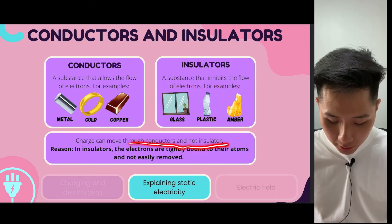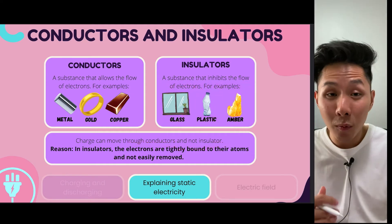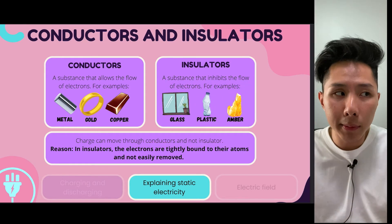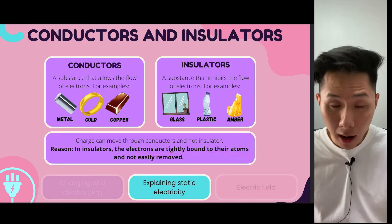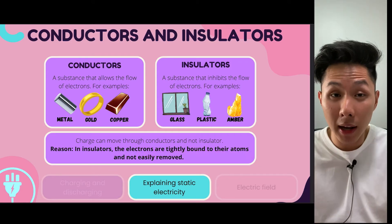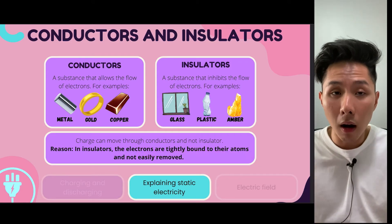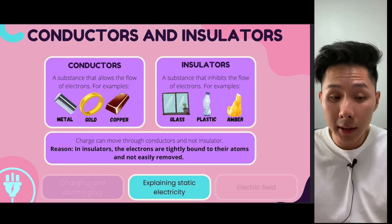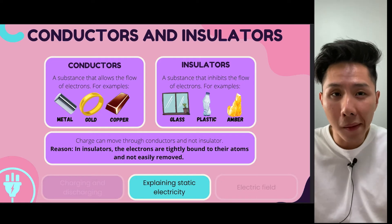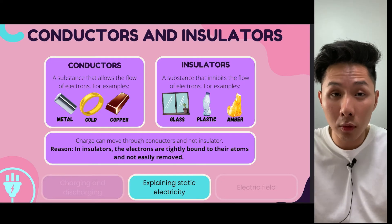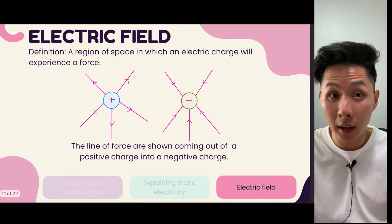Charge can move through conductors but not insulators. One reason for this is that the electrons are tightly bound in the atoms of an insulator, so they cannot flow as freely as the electrons in a conductor.